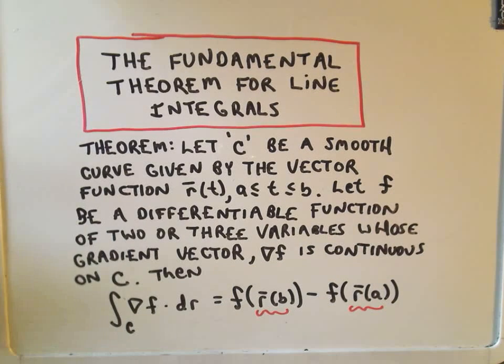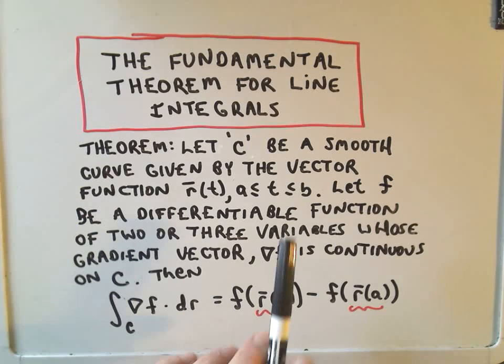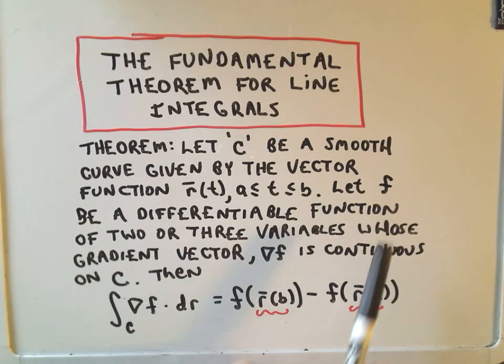And all it says is, if you have a smooth curve c given by the vector function r of t, where t is between a and b, it says,